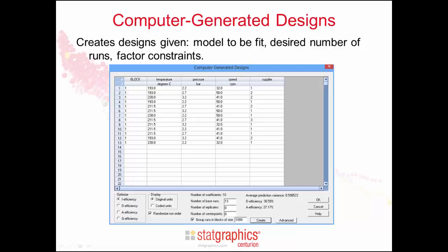This is the main dialog box used to create a computer-generated design. In the bottom left corner, the choice is made between I optimality, D optimality, A optimality, or G optimality. In the bottom center, the user specifies the number of base runs to be generated, the number of replicates desired, and the number of center points, if any. When the create button is pressed, the computer generates an optimal set of runs to be performed.